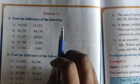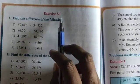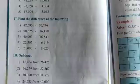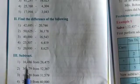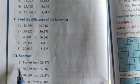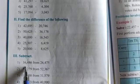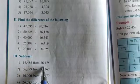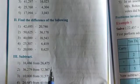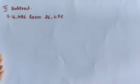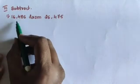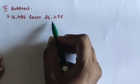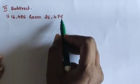Hi children, let us continue the exercise 3.1, chapter 3 subtraction, 3rd main: subtract. Question number 1: subtract 16,486 from 26,475.